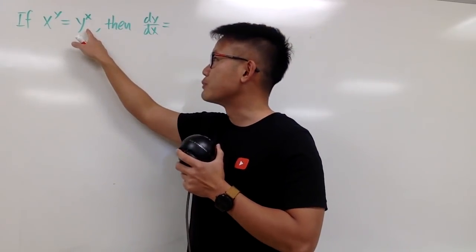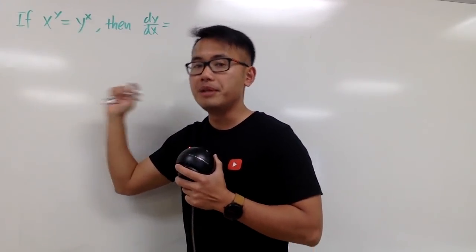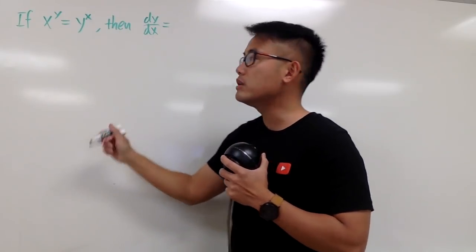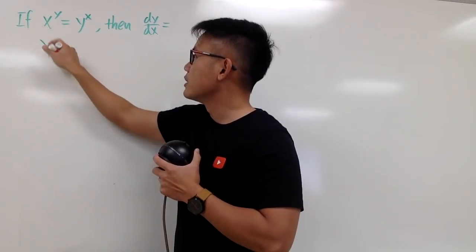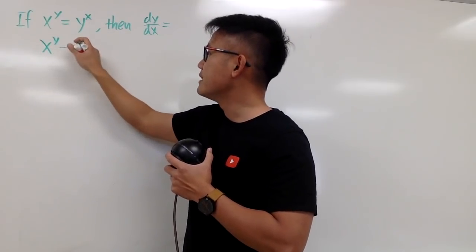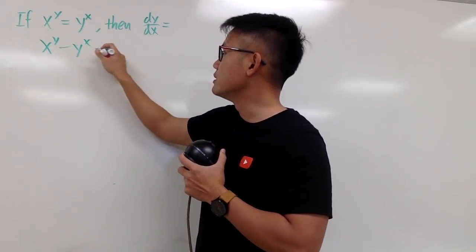What we do first is that we will subtract y to the x on both sides, because I want to have one side to be 0. So we will first get this right here, x to the y's power minus y to the x power, this is equal to 0.